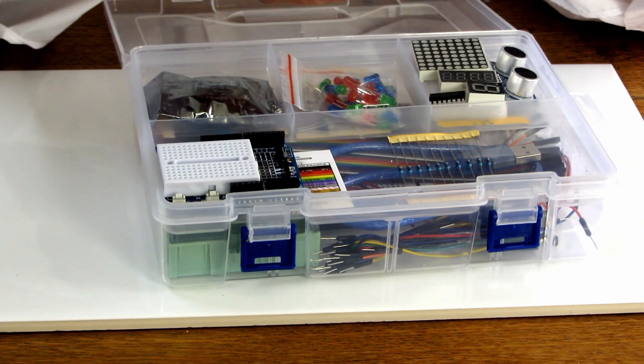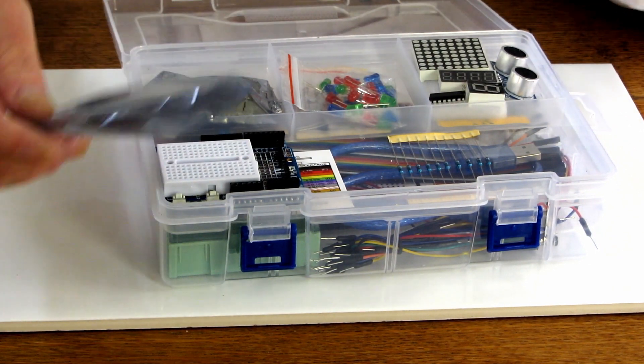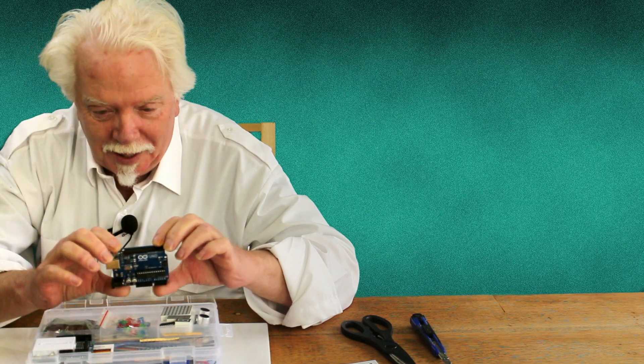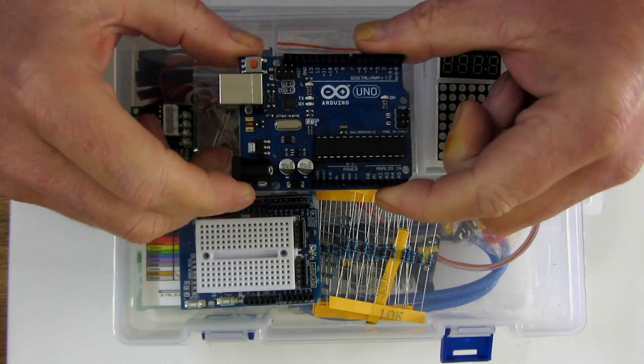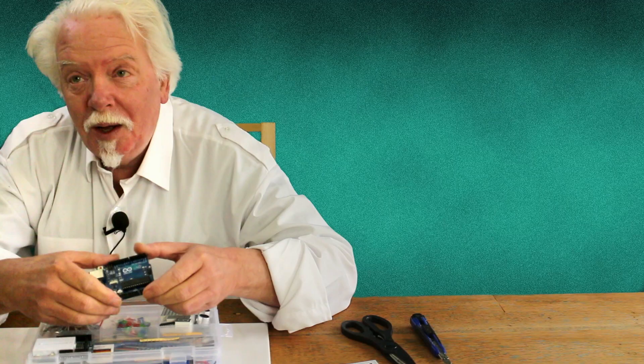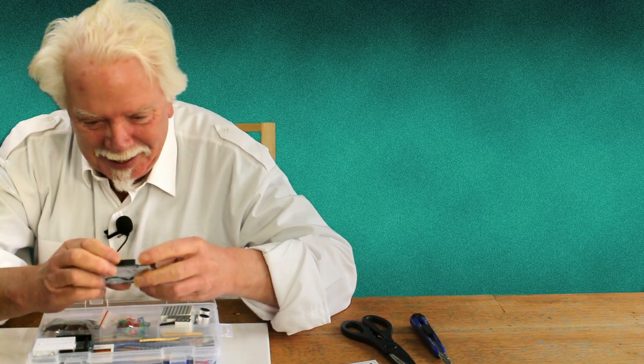In this anti-static bag is your actual Arduino. This is a genuine Arduino Uno R3, which is the most common, the most popular, the most copied. It's a little circuit board.